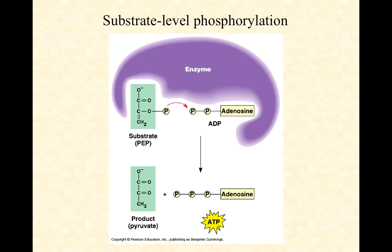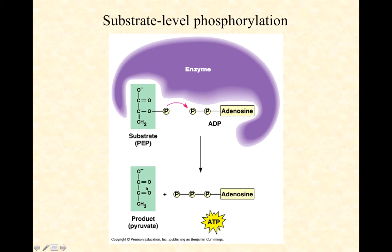Cleaving something off is a catabolic reaction — it increases entropy and gives off energy. The energy released by cleaving that phosphate is used to covalently attach the phosphate to the ADP, giving us ATP. Substrate level phosphorylation is simply taking a phosphorylated intermediate, transferring the phosphate from that intermediate to ADP, releasing the dephosphorylated carbon molecule — in this case pyruvate. This corresponds to enzyme number 10 in glycolysis.